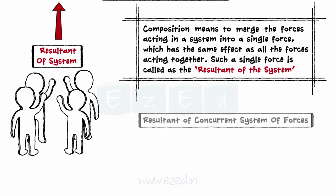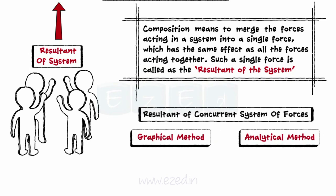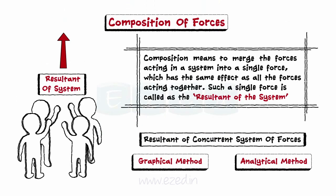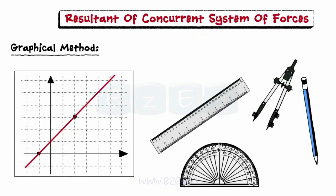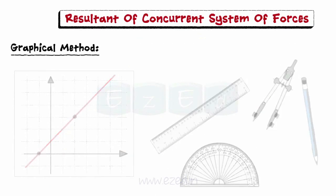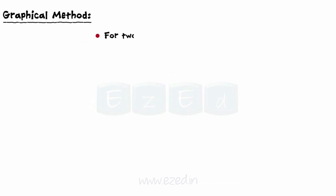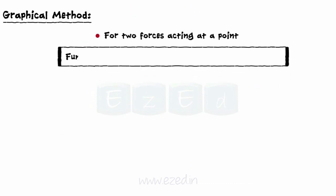Now we will learn how to find the resultant of a concurrent system of forces. This can be carried out by any one of the following two methods. Let's learn how to find the resultant of a concurrent force system by graphical method. First, we will see how to find the resultant by graphical method for two forces acting at a point.